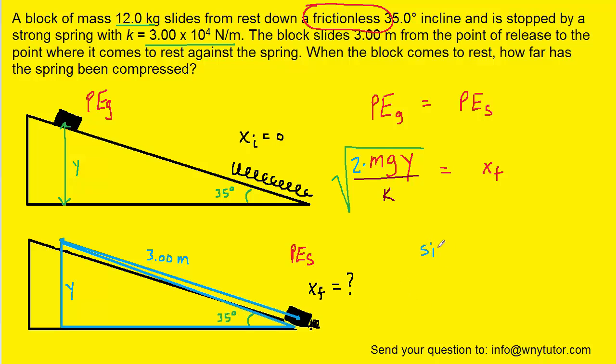We know the sine of any angle is equal to the opposite side divided by the hypotenuse. In our case, the angle is 35 degrees, the opposite side is y, and then the hypotenuse, you can see, is marked as 3 meters. That was the distance that the block slid down the ramp. So, if we multiplied both sides of this little equation by 3, that would cancel the 3 on the right side, and we would see that y is equal to 3 times the sine of 35. So, that's going to go in for this y right here.